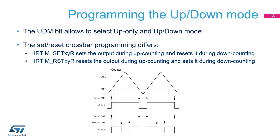The UDM bit enables the up-down mode. Most HR timer features are available in up-down mode, with the exception of auto-delayed and balanced idle modes. The events selected in the HR TIM SECXYR register code for both the output set during up-counting and the output reset during down-counting, allowing pulses centered in the counting period. The events selected in the HR TIM RESETXYR register code for both the output reset during up-counting and the output set during down-counting, enabling more complex waveforms.